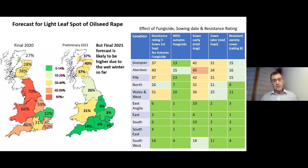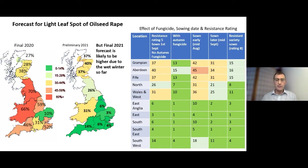This shows the light leaf spot forecast made last year and the preliminary one for this year, which was quite low due to a number of factors including warm dry weather in the summer. There's some uncertainty because the number of samples we could take during the lockdown period was quite low. We're expecting the forecast to be updated in March to become much more like the previous year's forecast, due to high winter rainfall.